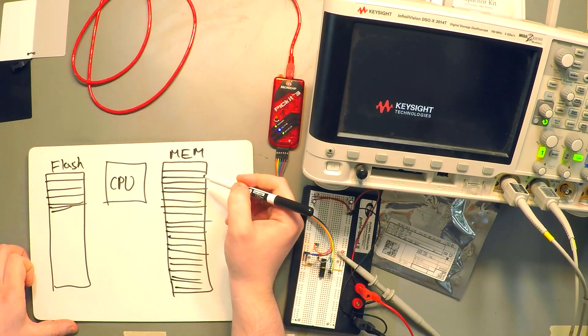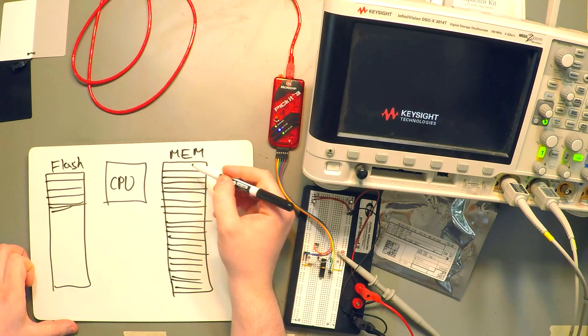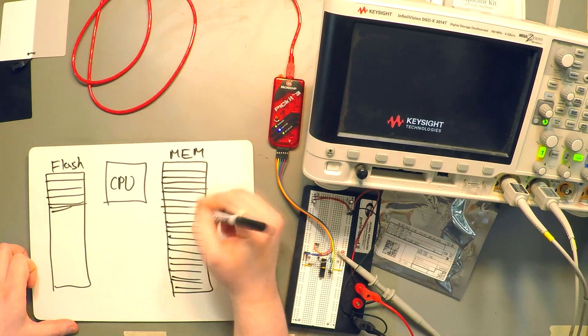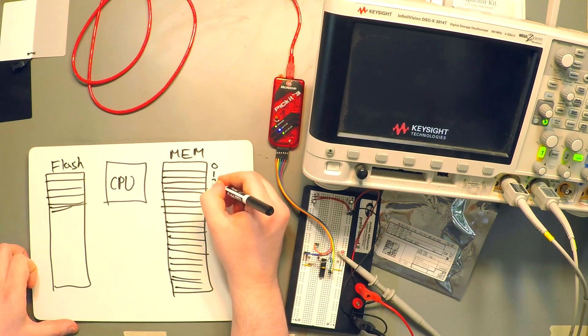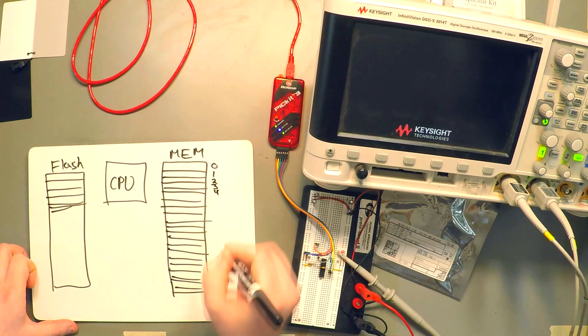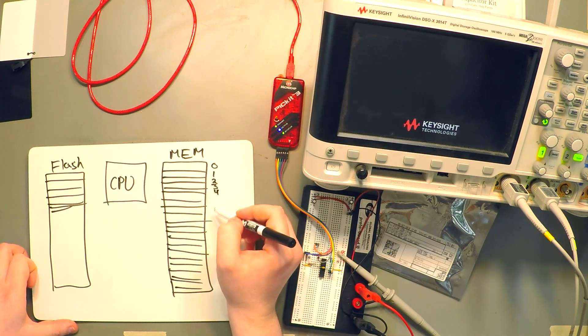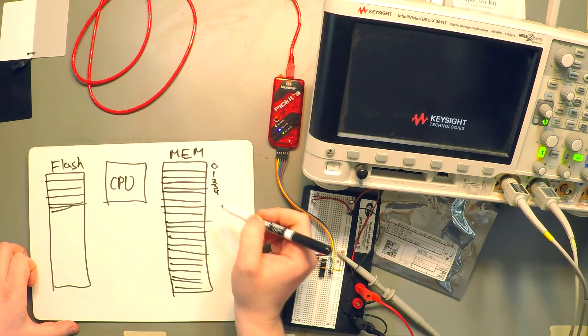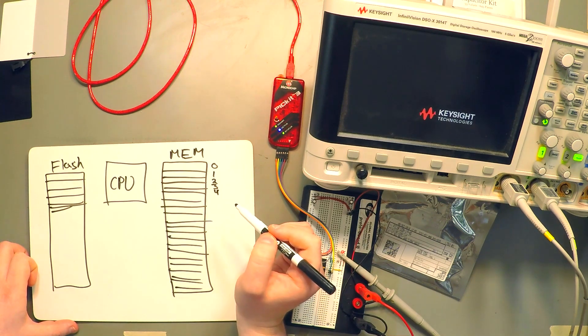Now, the memory is essentially a bunch of bins that hold a byte of data each. So the memory is going to have some sort of address like 0, 1, 2, 3, 4 and so on.